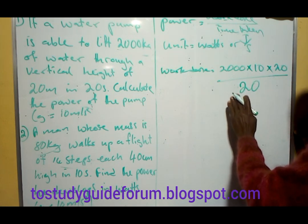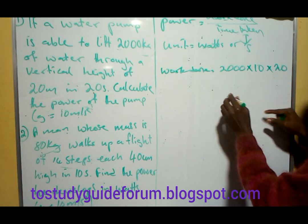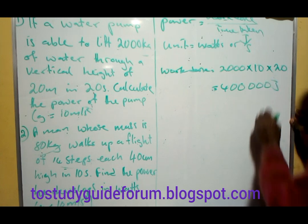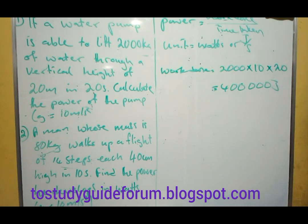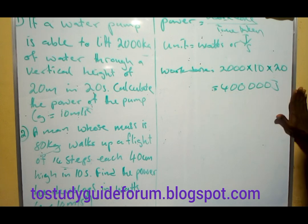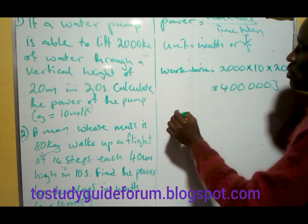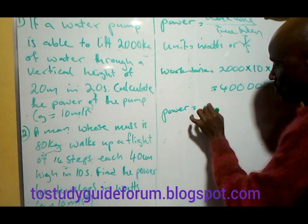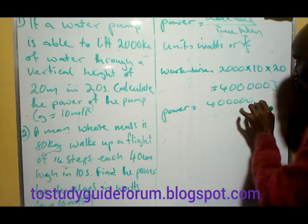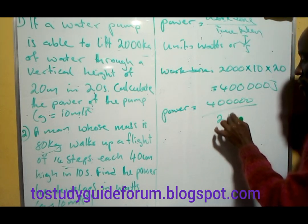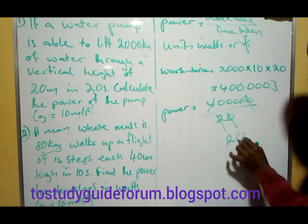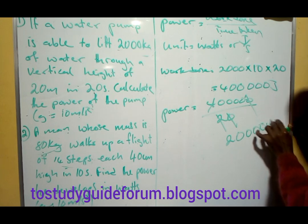That gives us 4,400,000 joules — sorry, 400,000 joules. Now to get the power, since we have the time, power equals 400,000 joules divided by 20 seconds. Those cancel out to give us 20,000 watts.